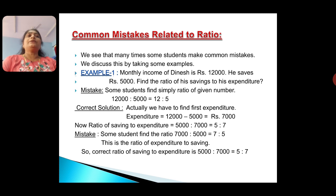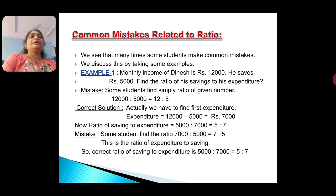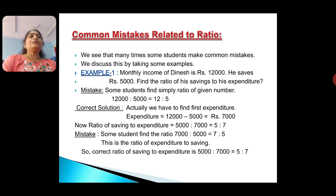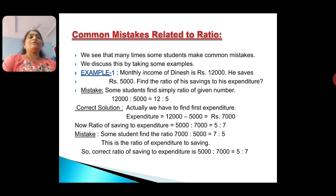Now, common mistakes related to ratio. Students, many times some students make common mistakes. We discuss these by taking some examples. Example 1: Monthly income of Dinesh is Rs. 12,000. He saves Rs. 5,000. Find the ratio of his saving to his expenditure. Some students simply find the ratio of given numbers: 12,000 ratio 5,000. Dividing both by 1,000 gives the least form 12 ratio 5. Students think 12 ratio 5 is the correct answer — but this is a mistake.